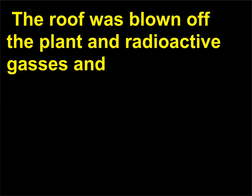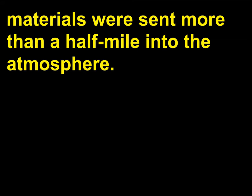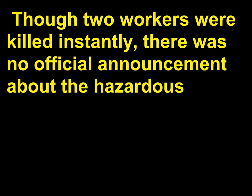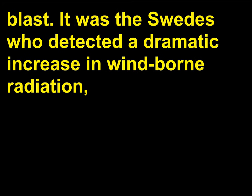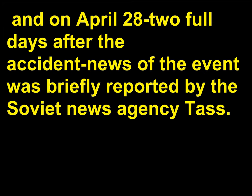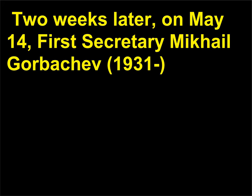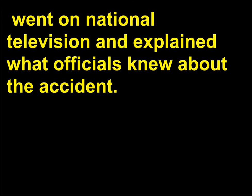The roof was blown off the plant and radioactive gases and materials were sent more than a half-mile into the atmosphere. Though two workers were killed instantly, there was no official announcement about the hazardous blast. It was the Swedes who detected a dramatic increase in windborne radiation, and on April 28 — two full days after the accident — news of the event was briefly reported by the Soviet news agency TASS. Two weeks later, on May 14th, First Secretary Mikhail Gorbachev, 1931, went on national television and explained what officials knew about the accident.